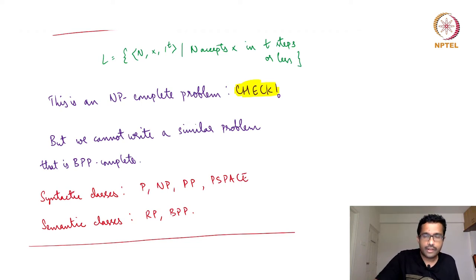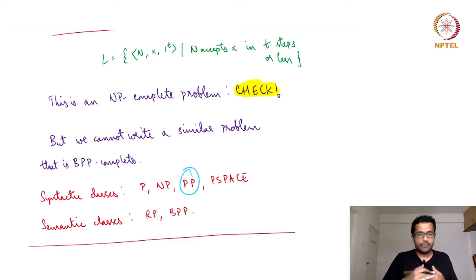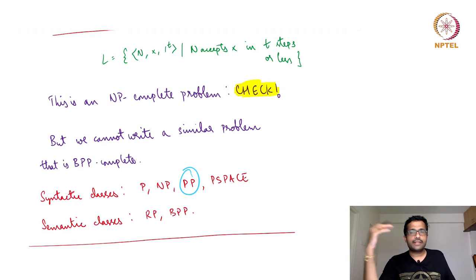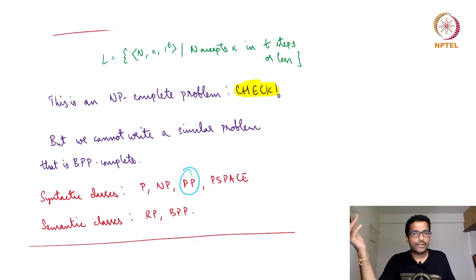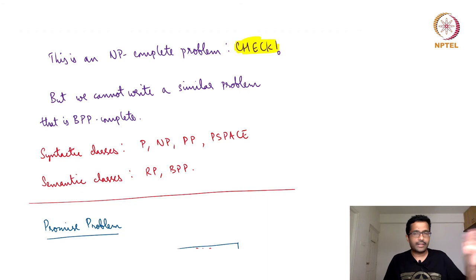Any Turing machine that is deterministic and a decider will decide a language — same for NP and PSPACE. And if you think about it, it is the same for PP as well. For PP there is no gap: with probability greater than or equal to half you accept, and strictly less than half you reject. So any string, no matter with whatever probability it is accepted, is either in the language or not — strictly less than half means not in the language, greater than or equal to half means in the language. So even PP is a syntactic class.